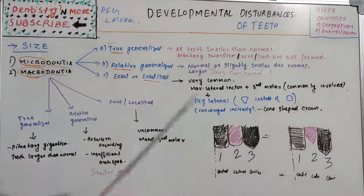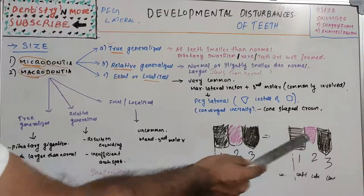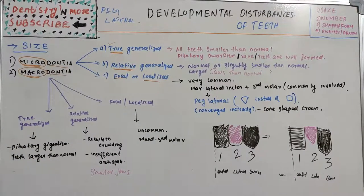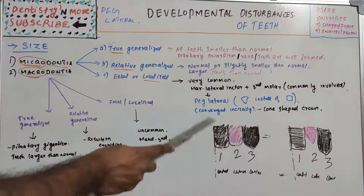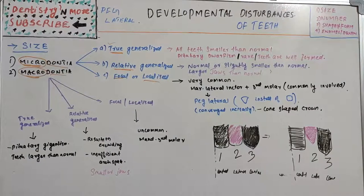The third molar is also commonly involved in focal microdontia, but it is not clinically obvious — only a dentist is able to visualize it. Peg lateral, being in the anterior region, is very visible and even the patient is well aware of it. Peg lateral is a focal or localized microdontia, as is third molar microdontia. Either one or both may be present in a patient.